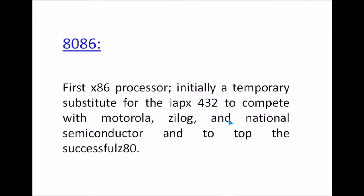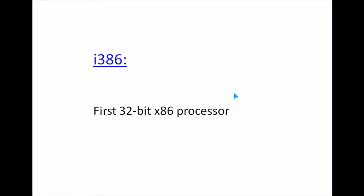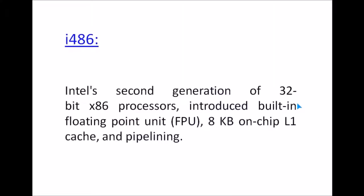After the 8086 came the 186, which included a DMA controller, interrupt controller, timers, and chip-select logic. Then came the 286, the first x86 processor with protected mode. The i386 was the first 32-bit x86 processor. The i486 was Intel's second generation of 32-bit x86 processors, introducing a built-in FPU (floating point unit), 8 KB on-chip L1 cache, and pipelining.